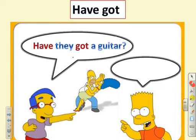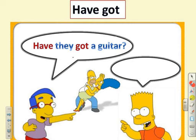Look at the next picture. How do you form a question using 'have got'? Start with 'have.' What comes after 'have'? The subject — 'they.' What comes after 'they'? 'Got.' What do you put at the end? A question mark. So the question is: have they got a guitar? What's the answer? No, they haven't. Great job!